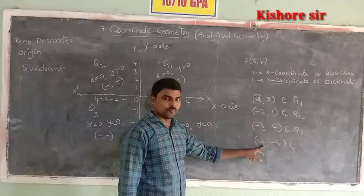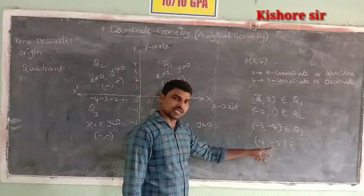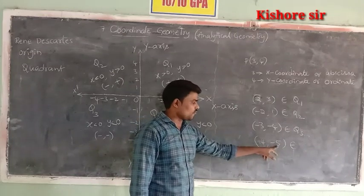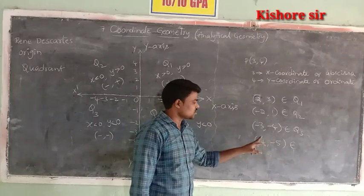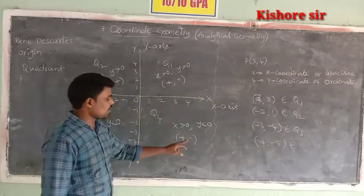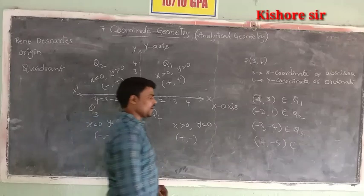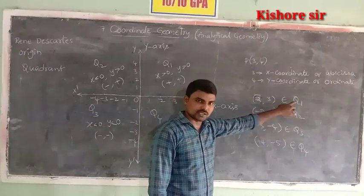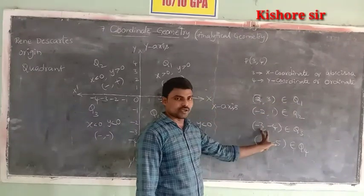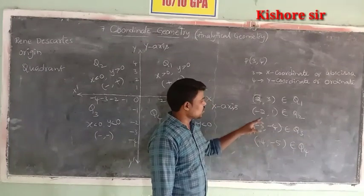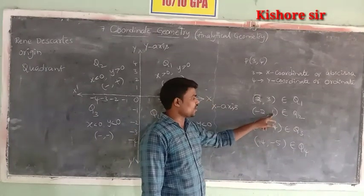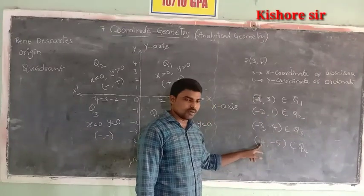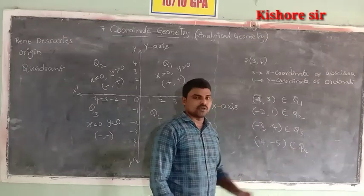Now observe the final point (4, −5). The sign of the x-coordinate is positive (plus) and the sign of the y-coordinate is negative (minus). So (+, −) belongs to Quadrant 4. To summarize: both positive → Quadrant 1; x negative, y positive → Quadrant 2; both negative → Quadrant 3; x positive, y negative → Quadrant 4.